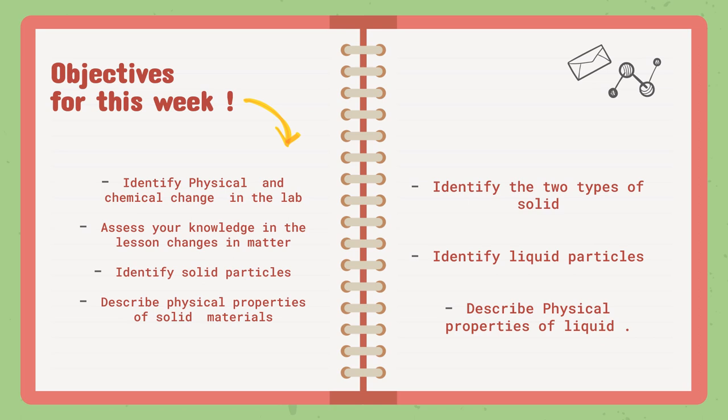First, we are going to identify solid particles. After that, we are going to describe physical properties of solid materials and identify the two types of solid. We are going to know them and be able to distinguish between the two types.